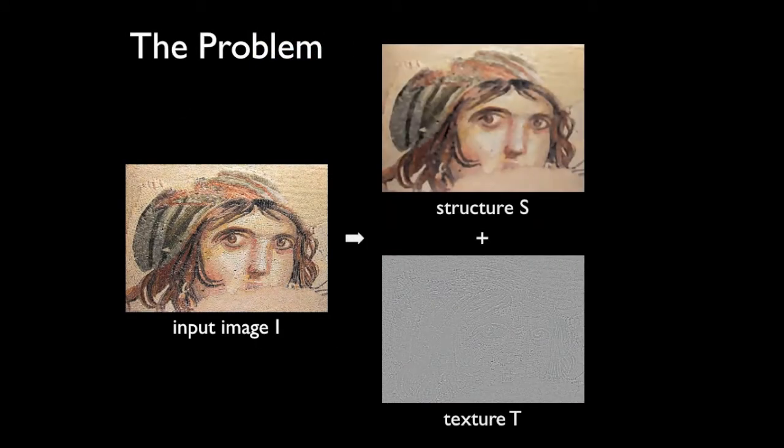Our proposed approach allows us to decompose an image into two separate layers: a coarse layer representing the prominent structures beneath the image, and the residual detail layer characterizing only the texture.